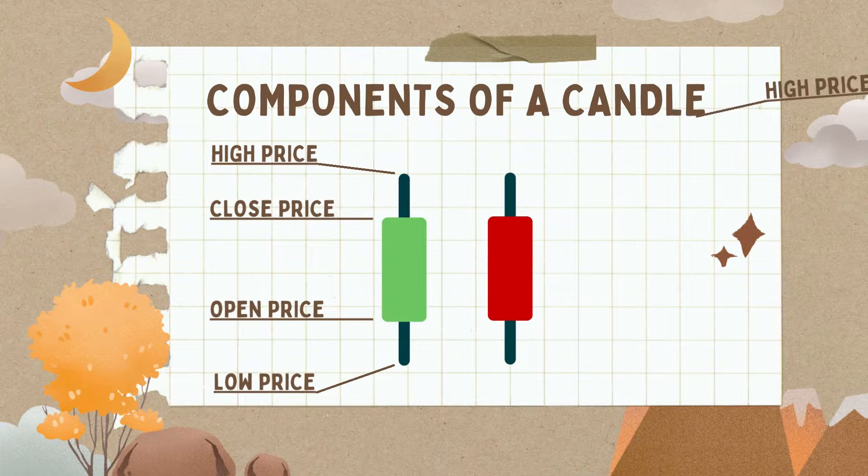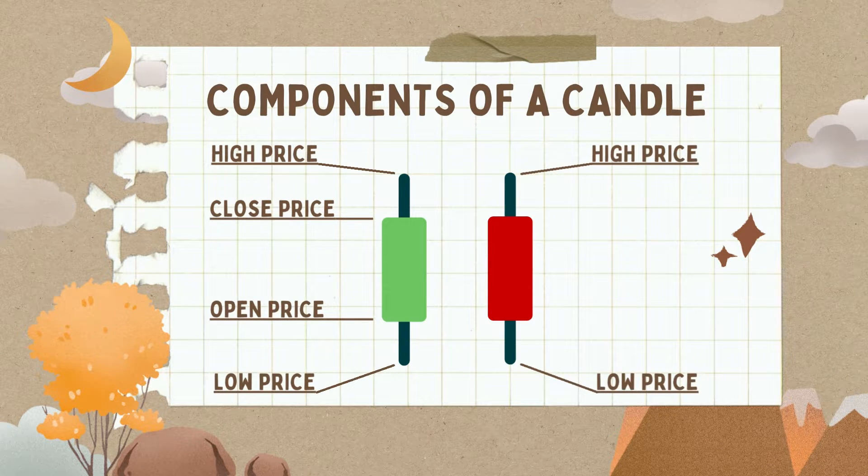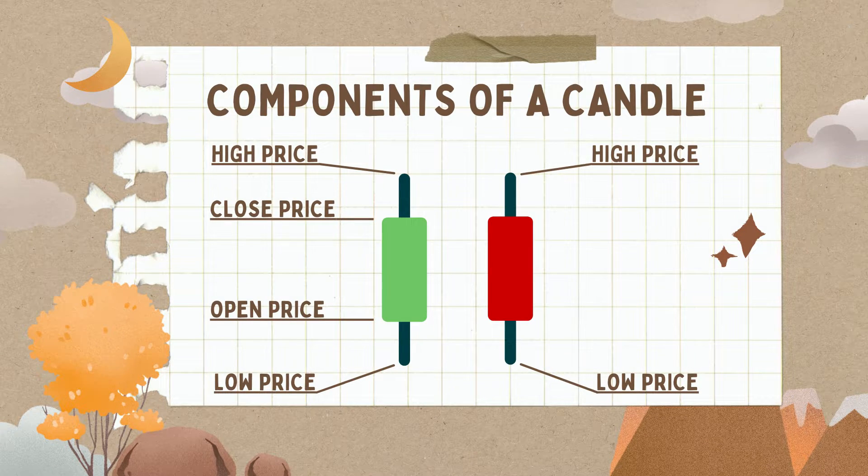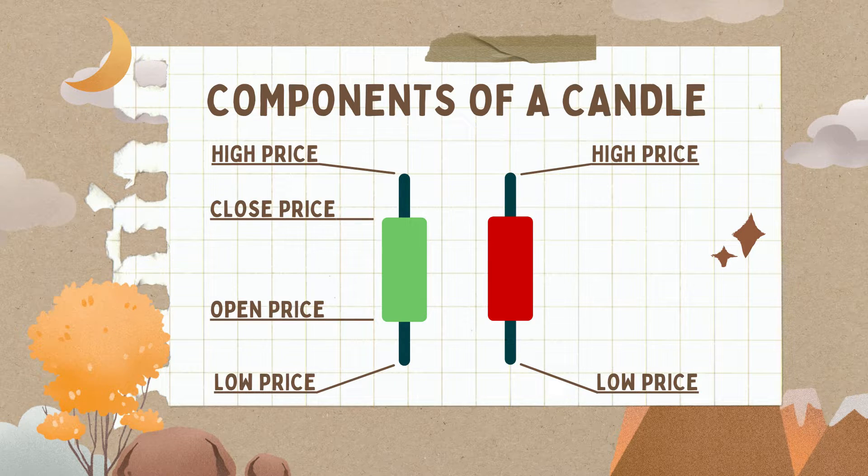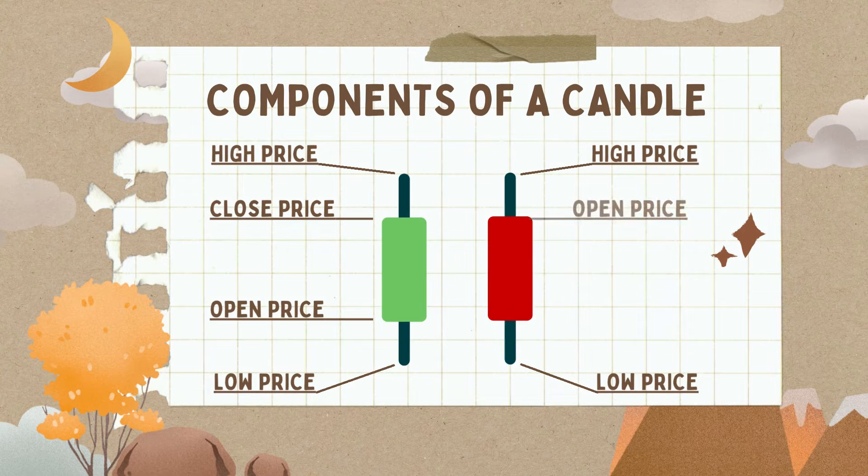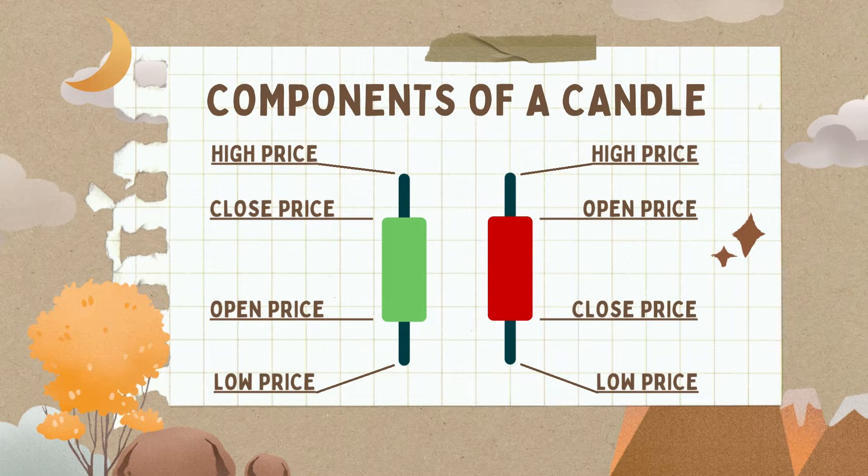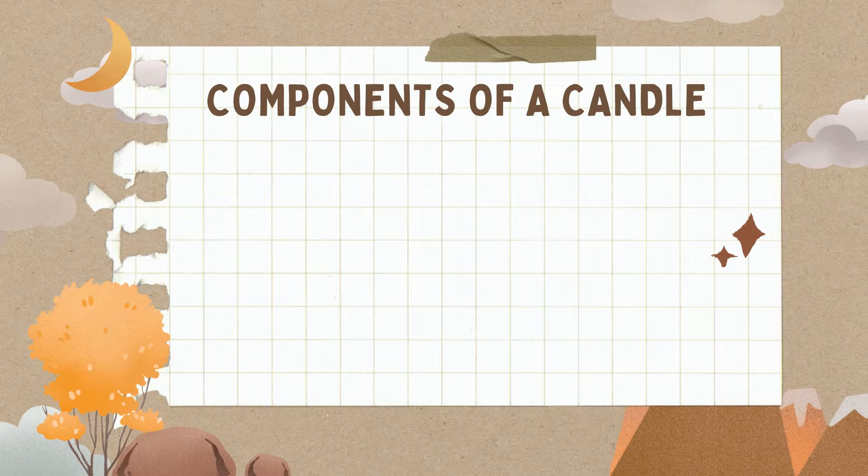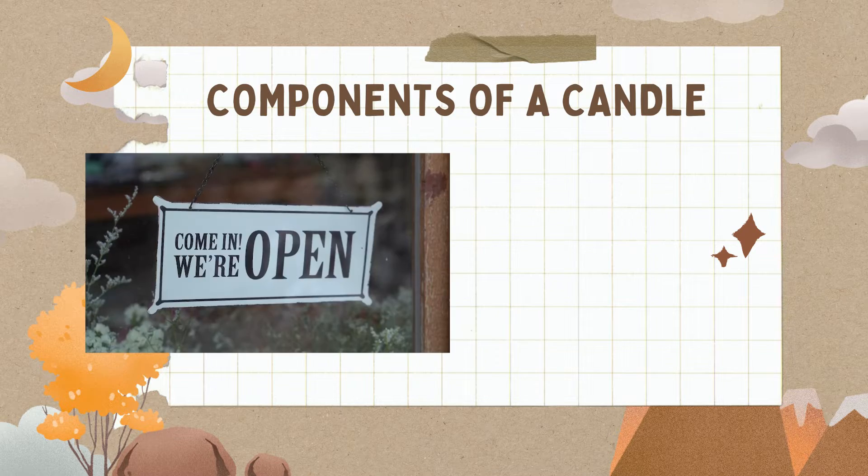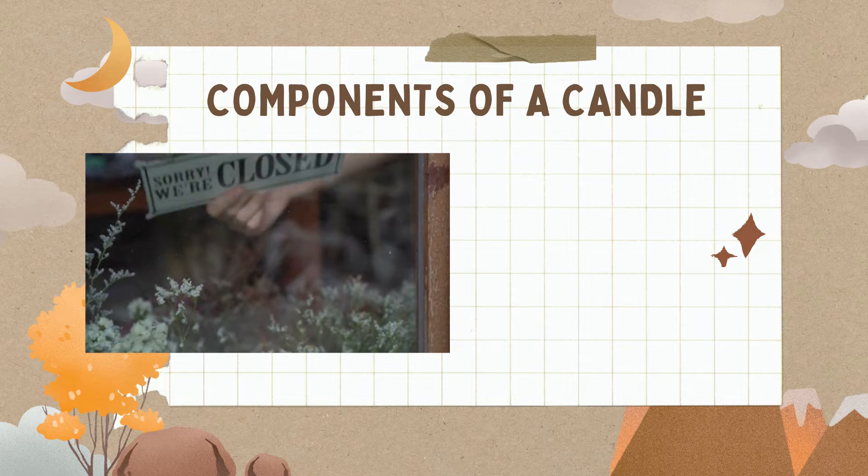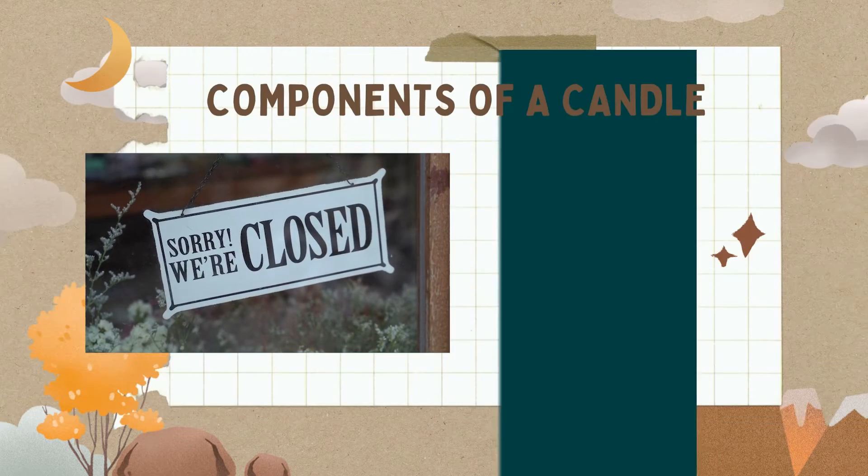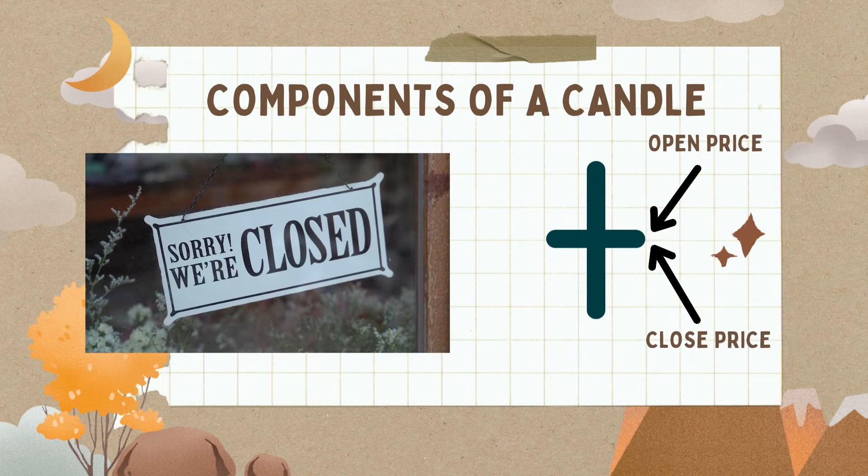On a red candle, the top and bottom wicks are the same. Top is high and bottom is low, but the body is the opposite of a green candle. Top is where the stock opened, and bottom is when the stock closed in that time period. And, like we mentioned before, if the stock opened and closed at the same price, then your candle will actually just be a cross.